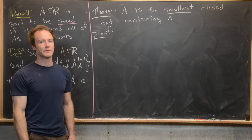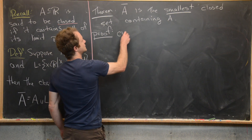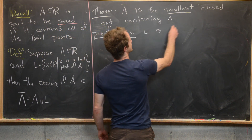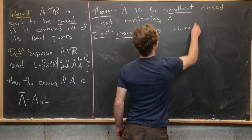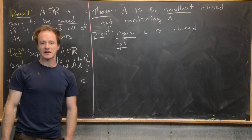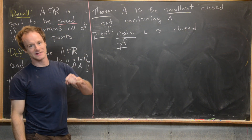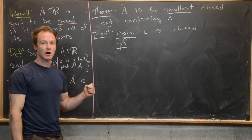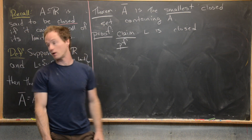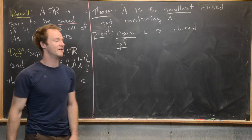We're going to start this proof by proving that the set of all limit points L itself is closed. For L to be closed, we need L to contain all of its limit points. So we want to start with a limit point from L and show that it is indeed inside of L. But recall, being inside of L means you are a limit point of A.